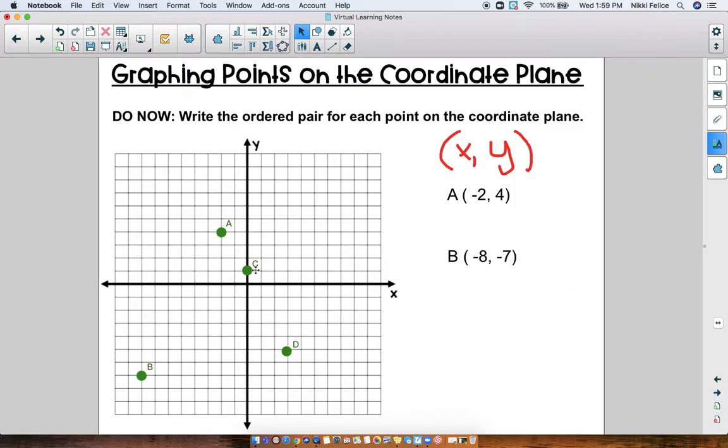Point C, do we count to the right or the left for point C? No, it stayed right here in the middle. So that's 0 for the x-coordinate. And then we went up 1, so that's 1 for the y-coordinate. So C is 0, 1.